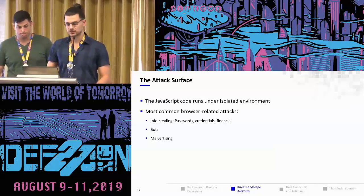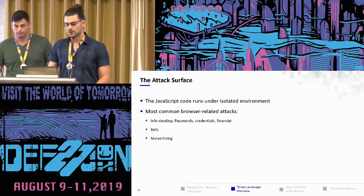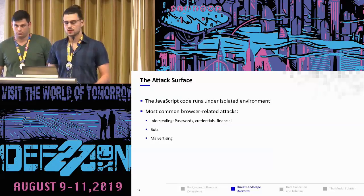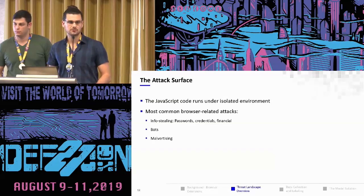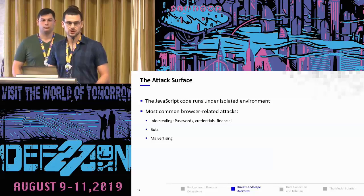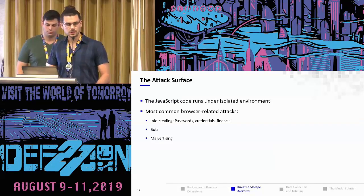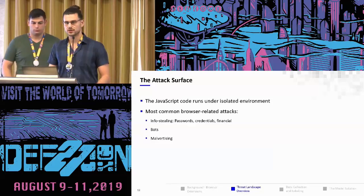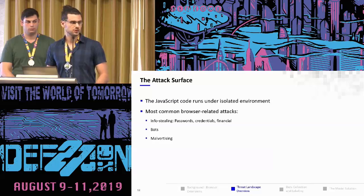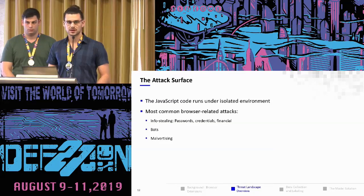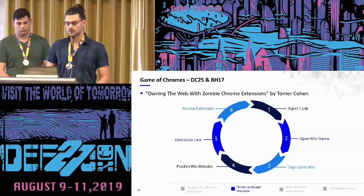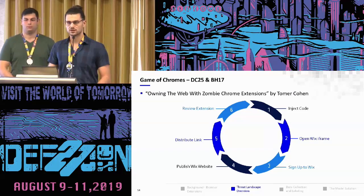Let's talk about the attack surface. All JavaScript code runs in Chrome's isolated sandbox environment, so it cannot touch the machine's memory or file system without an exploit. What it can still do is everything related to the browser itself — for example, stealing information or credentials, forming a botnet by installing extensions on many machines, and monetizing through advertisements and similar techniques. Now we'll see an example of an attack presented at DEF CON and Black Hat two years ago.